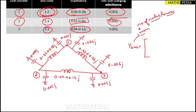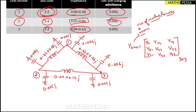We have three nodes, so it will be a 3×3 matrix with elements Y11, Y12, Y13, Y21, Y22, Y23, Y31, Y32, Y33. We will find each element now. Remember the rules we are about to go through.